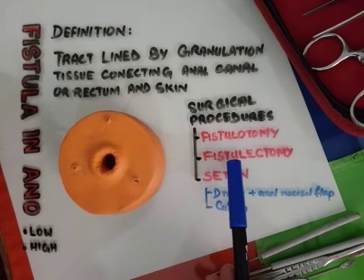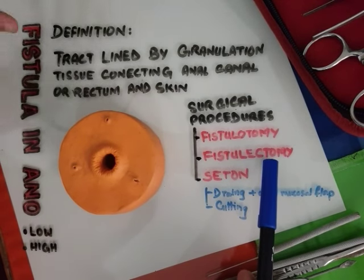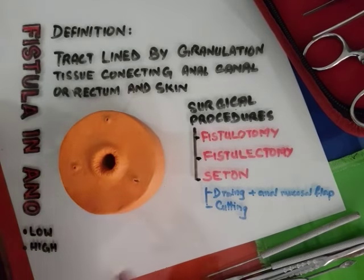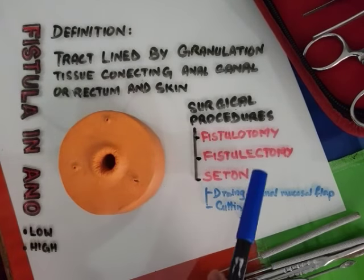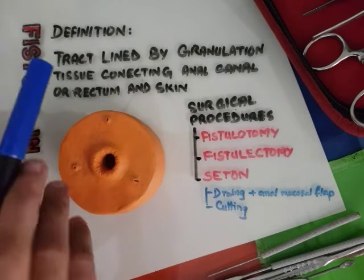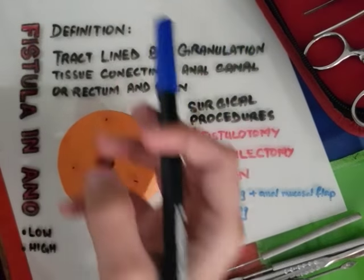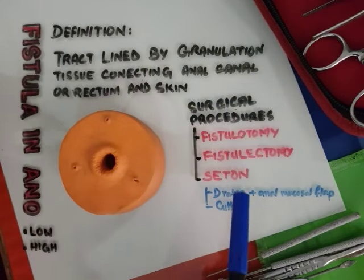The second is fistulectomy. As the name indicates, in this we remove the whole fistula — like in thyroidectomy we remove the thyroid. So in fistulectomy we cut around the fistula's tract and remove it.